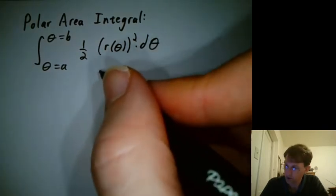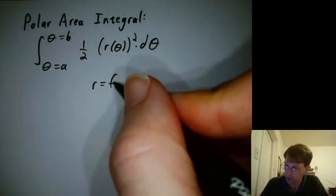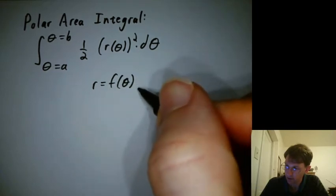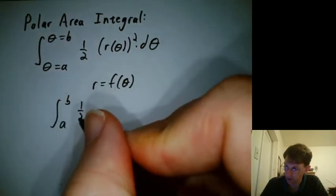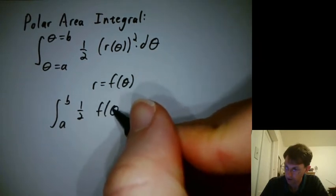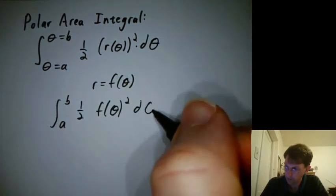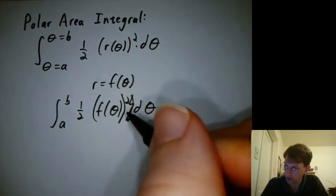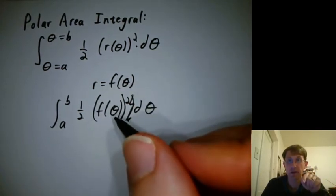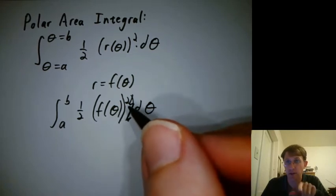You could also write, if you're writing r equals some function of theta, you could say integral a to b, one-half f of theta squared d theta. We should make it clear that we're computing the function of theta first and then squaring it, not squaring the theta.